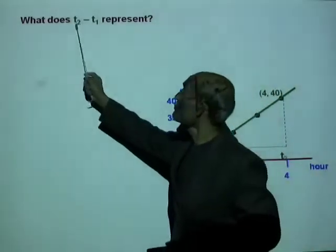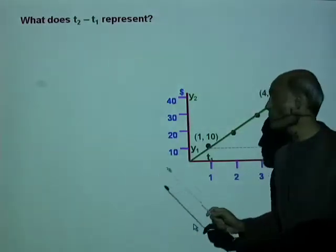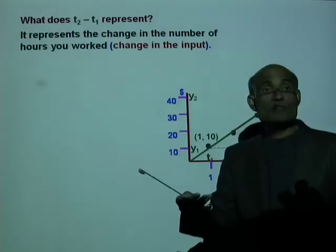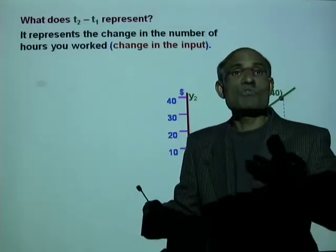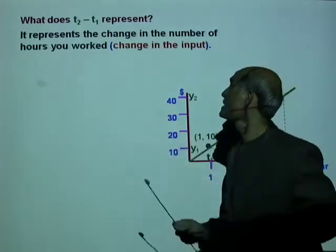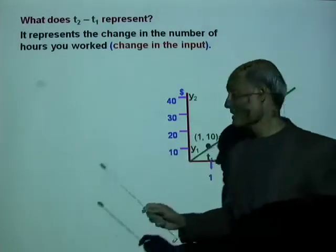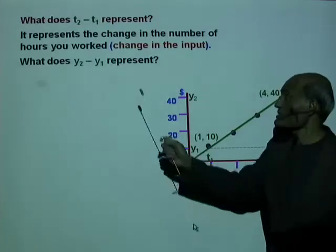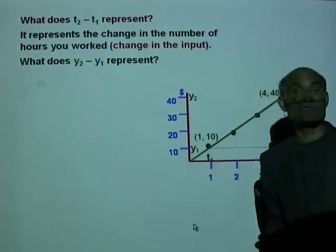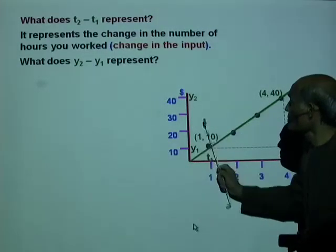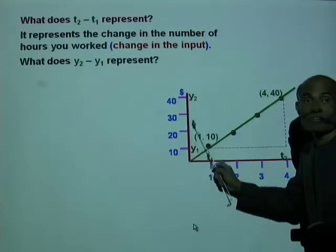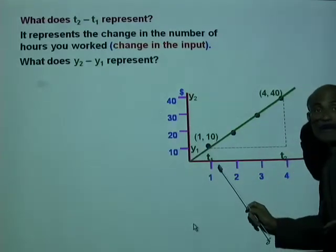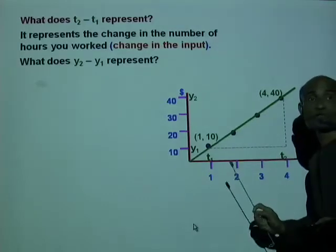What does the quantity t2 minus t1 represent? It actually represents the change in the number of hours you worked — the change in the input. When there is a change in the input, there is a corresponding change in the output. So y2 minus y1 — that is forty minus ten — represents the corresponding change in the output when the input changed by t2 minus t1.